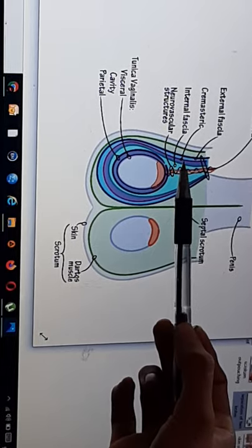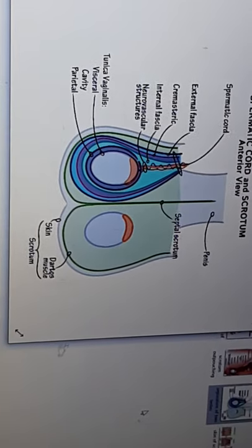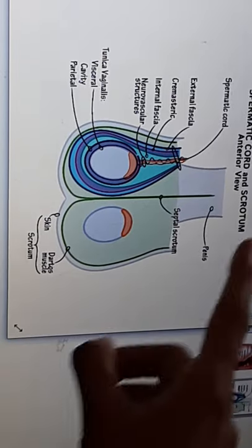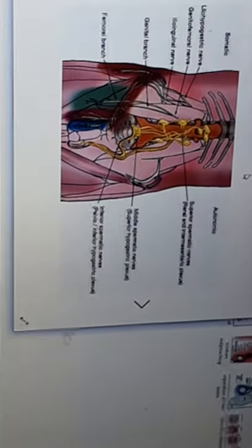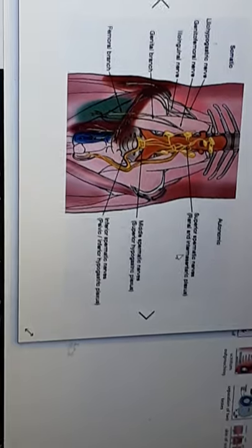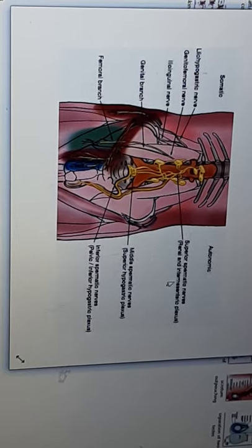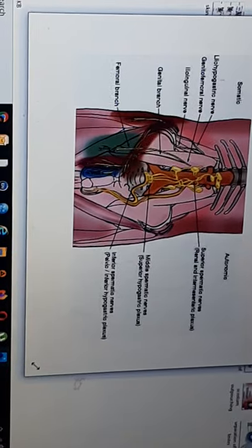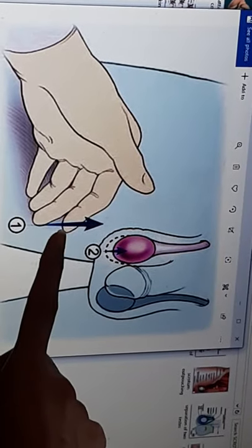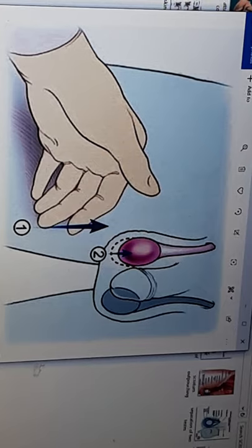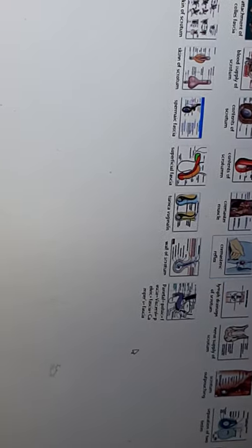The cremasteric fascia is derived from the internal oblique muscle, and the internal spermatic fascia is derived from the transversalis fascia. The cremasteric fascia contains the cremaster muscle, which is associated with a reflex. The cremaster muscle is supplied by the genital branch of the genitofemoral nerve. If the medial aspect of the thigh is stroked, the cremaster muscle contracts — this is known as the cremasteric reflex.